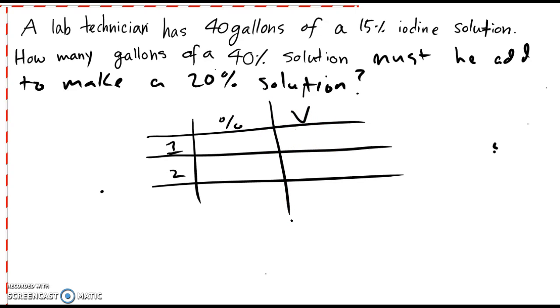So for solution 1, it's a 15% solution and we're going to have 40 gallons of the volume. And we're going to add that to a 40% solution, change to a decimal is 0.4, and we don't know how much he's adding.